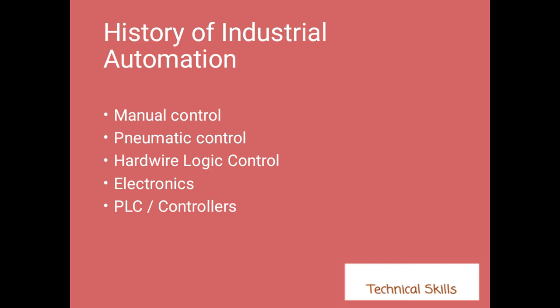Then we moved ahead to hardware logic control, where we became dependent upon electricity — relay logic control. This also had disadvantages: big, bulky panels and complexity of wiring. And again, for a particular process there was a particular wiring, and for a different process there was different wiring. It was not a standard wiring that could be applied to all processes. This was also a drawback in hardware logic control.